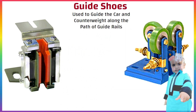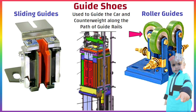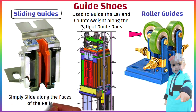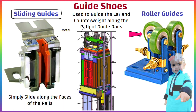There are two types of guide shoes: one, roller guide shoes; two, sliding guides. Roller guides use rollers that rotate on guide rails — a set of three wheels that roll against the rails. You can see roller guide shoes on rails in this picture. Sliding guides simply slide along the faces of the rails. The sliding insert or jib may be metal, requiring guide rails to be lubricated, or may be a plastic material which is self-lubricating.